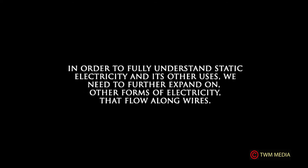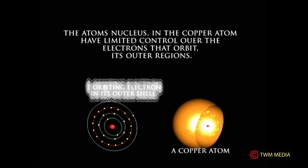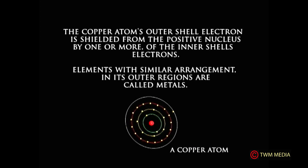In order to fully understand static electricity and its other uses, we have to further expand on other forms of electricity that flow along wires. Earlier in this session, it was discussed that when electrons orbit the nucleus of various types of atoms, they have a tendency to break free and wander away from the atoms. These types of atoms are referred to as free electrons. A continuous flow of these electrons creates electric current. Some materials, such as copper, can easily cause this condition to exist. The atom's nucleus in the copper atom has limited control over the electrons that orbit its outer regions. The copper atom's outer shell electrons are shielded from the positive nucleus by one or more of the inner shell's electrons.